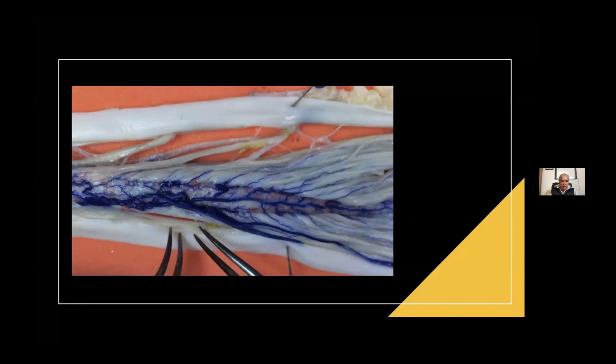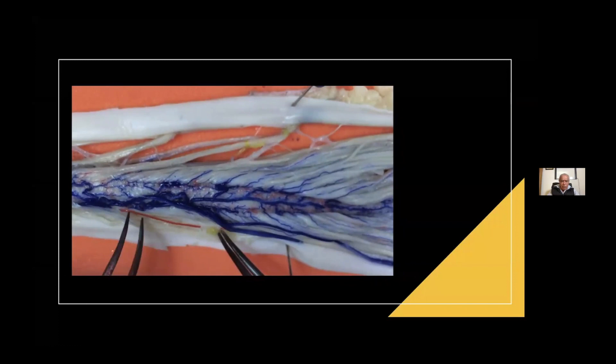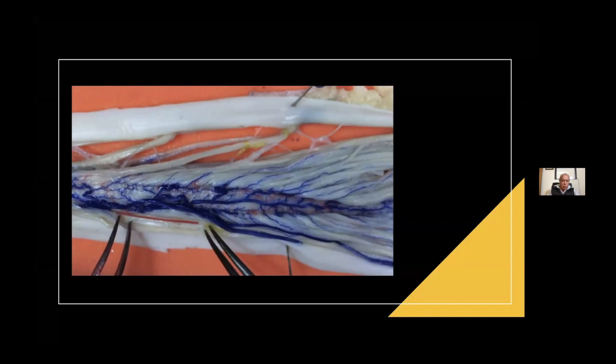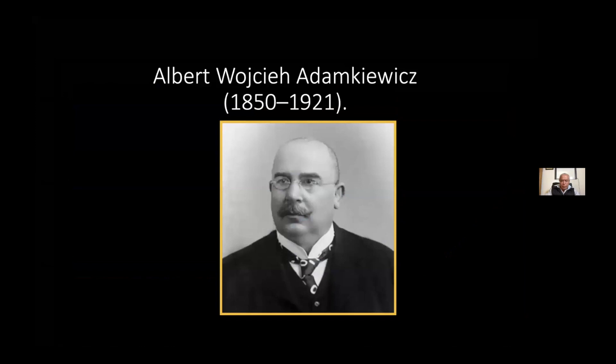What I am going to talk about is this great posterior radicular medullary artery. This is very, very interesting. The artery because it's giving rise to the arterial fluid to the dorsal aspect of the spinal cord.